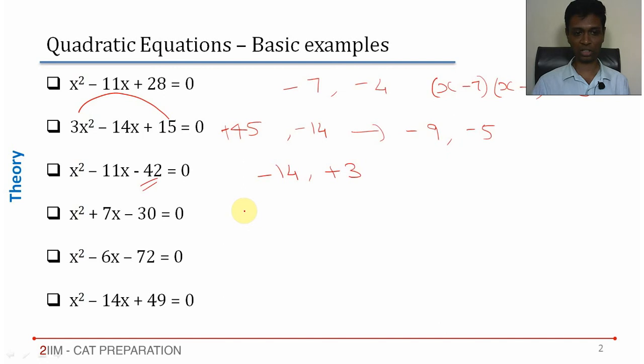x² + 7x - 30. Again, the product is negative. We should have 1 positive and 1 negative. The difference should be 7 because we are having 1 positive and 1 negative adding up to 7.